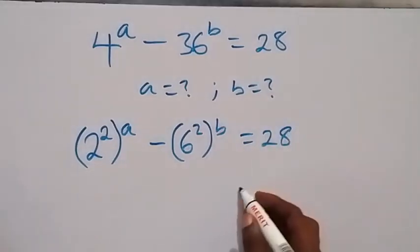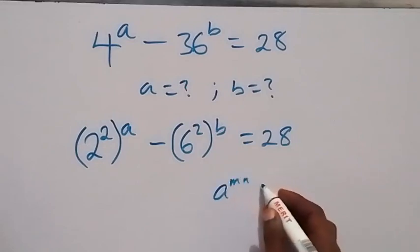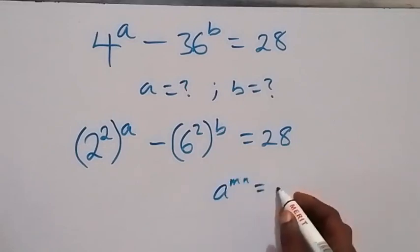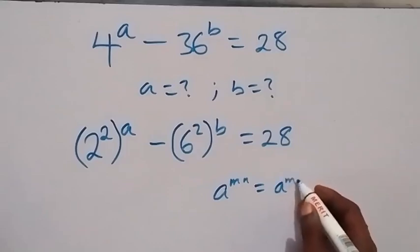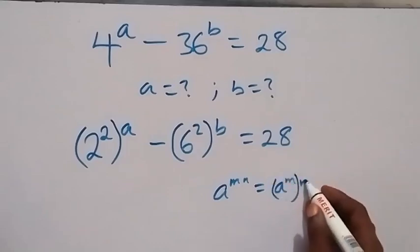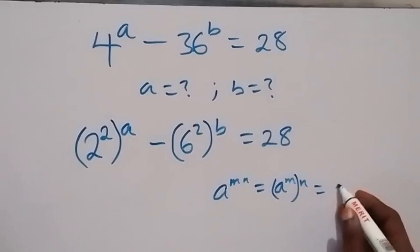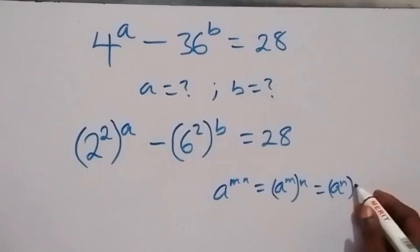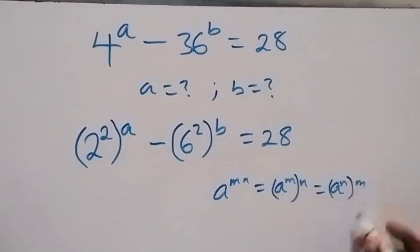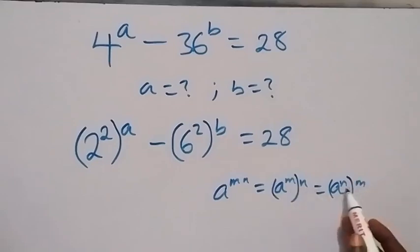From the law of indices, when we have a raised to power a, this is the same thing as a raised to power a, close bracket, raised to power a — which is also the same as a raised to power a, close bracket, raised to power a. So now this problem means we can interchange it.